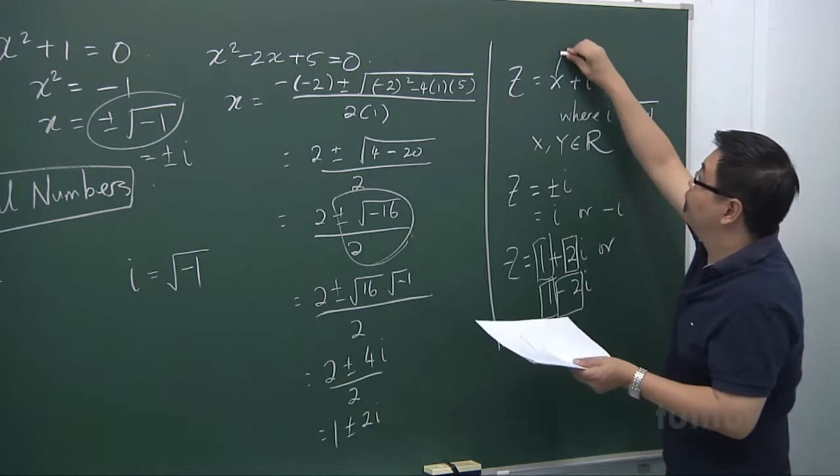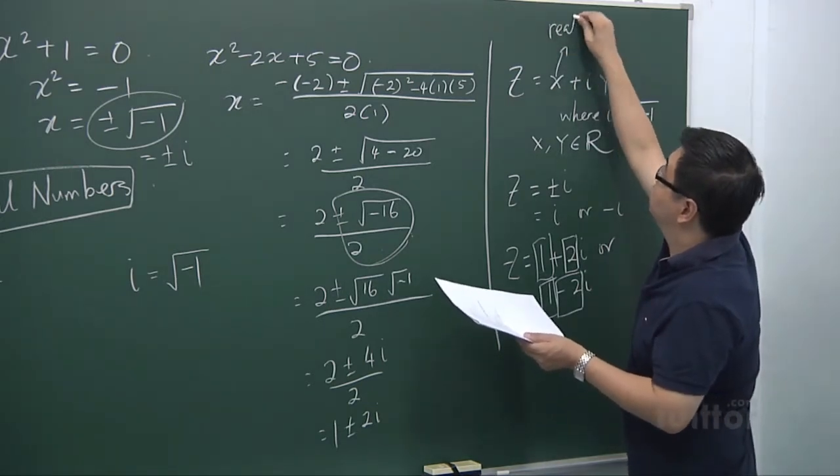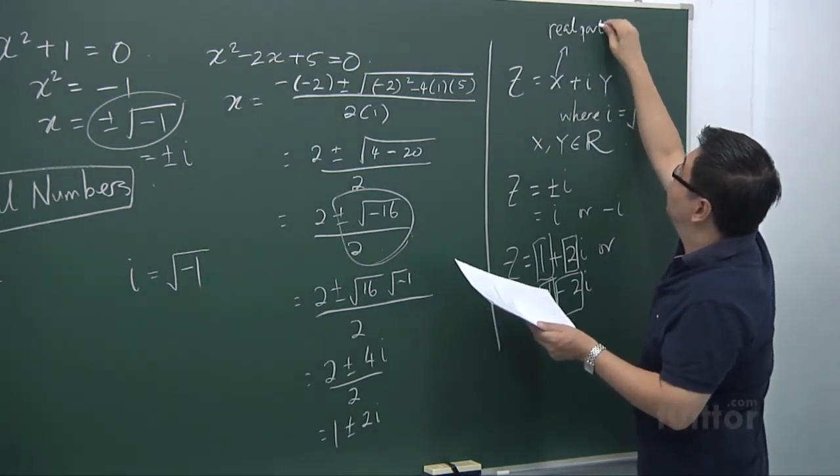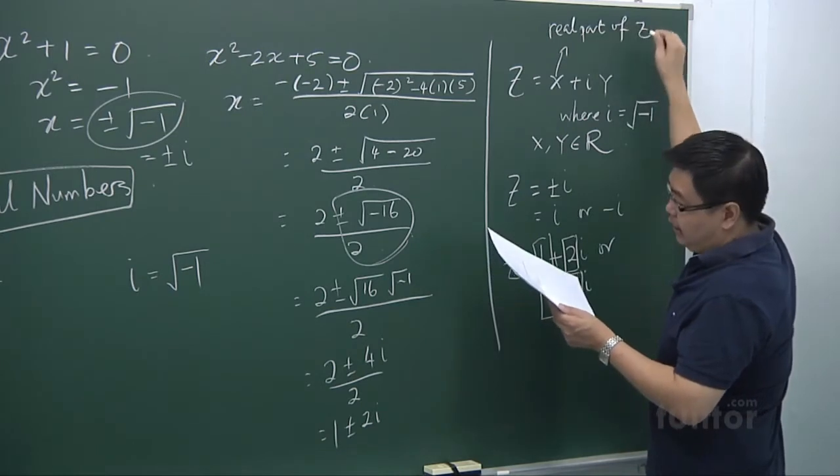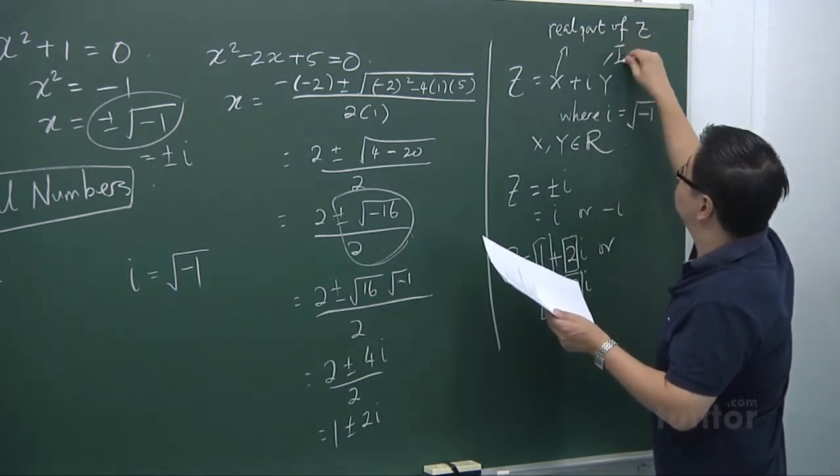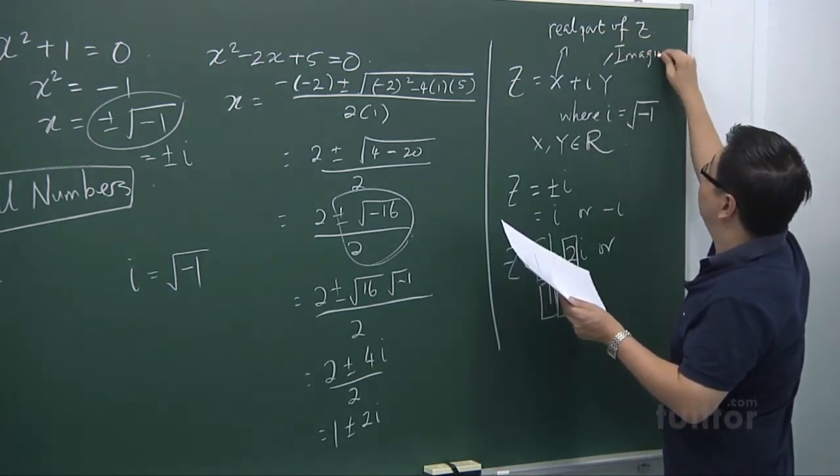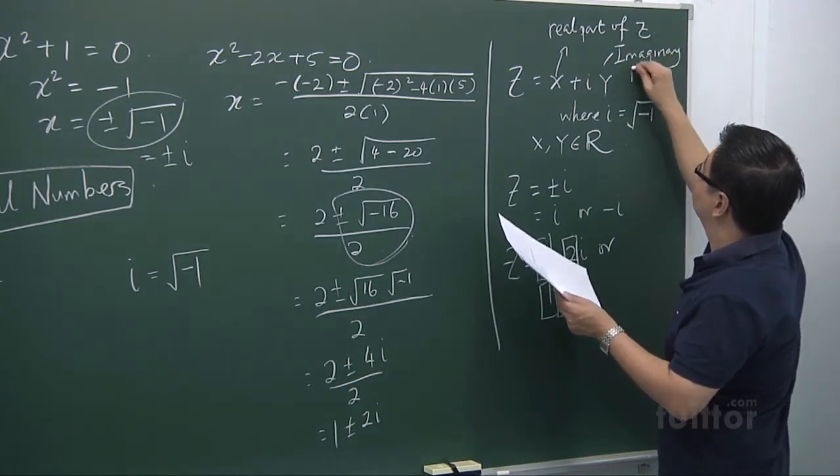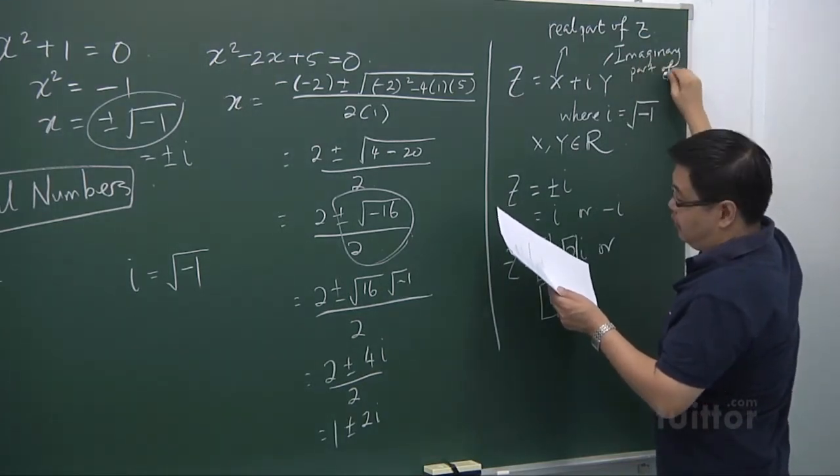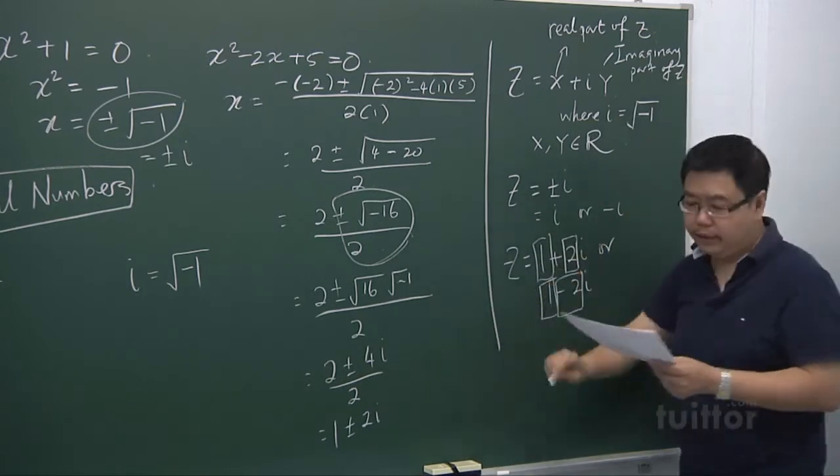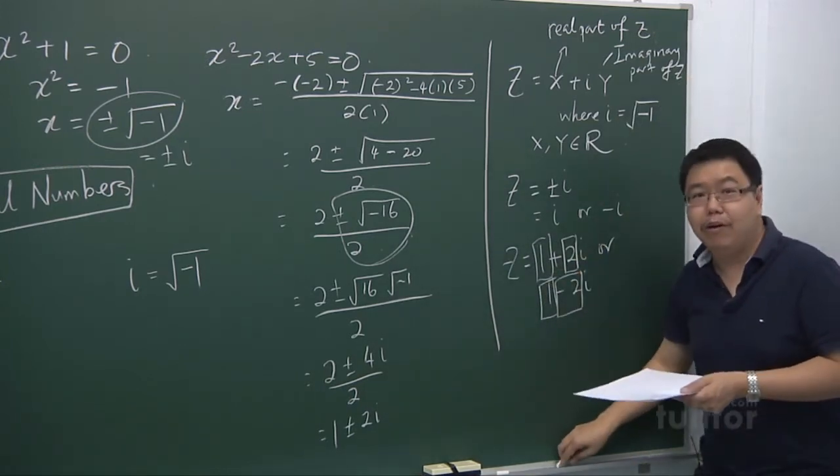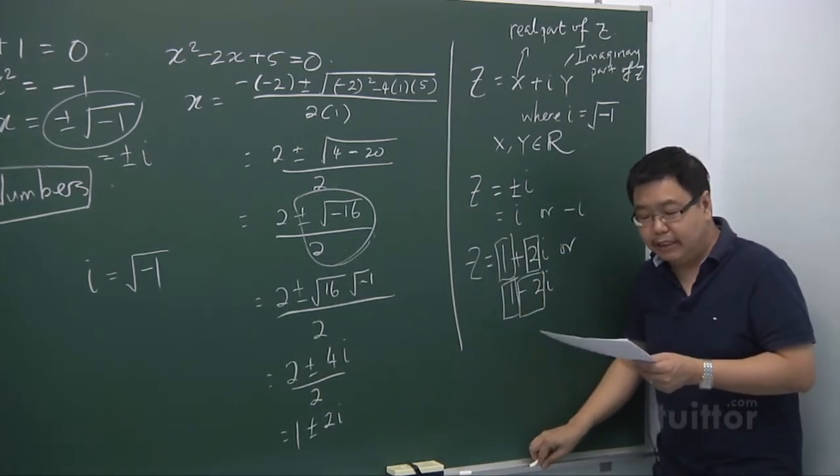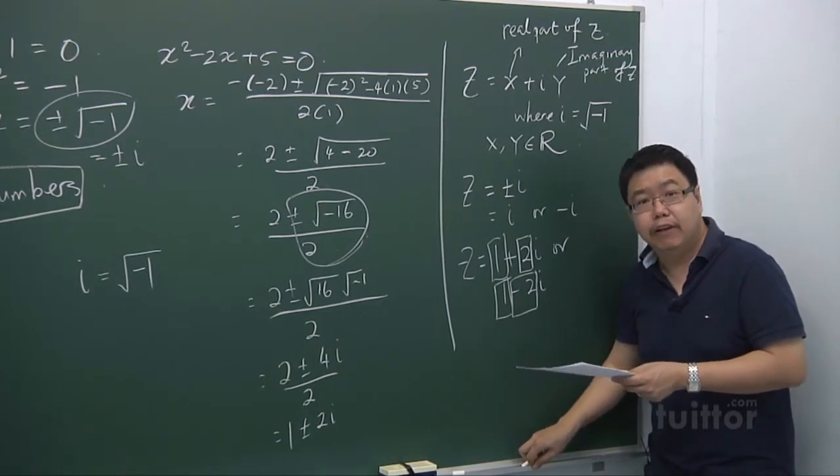The x is what we call the real part of z. And the y is called the imaginary part of z. Let us know a little bit more about complex numbers by studying some of the operations involving complex numbers now.